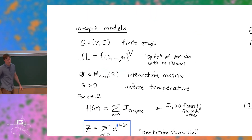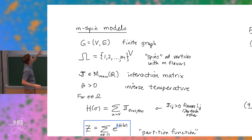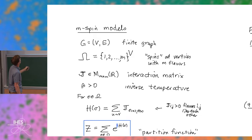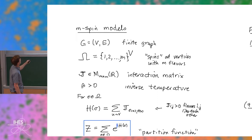For definitions: I've got a finite graph G, and I want to define a general framework that generalizes all of stat mech at the same time. Let me start with an M-spin model. I've got M colors; the configuration space is colorings of the vertices with M different colors, or spins. I've got a general M-by-M interaction matrix — real numbers — beta is the inverse temperature. The Hamiltonian is a sum over nearest-neighbor pairs, and the contribution from a pair of spins is the corresponding matrix entry.